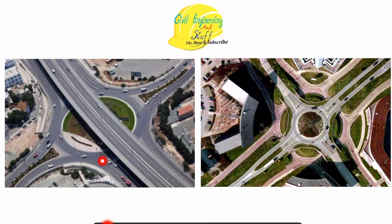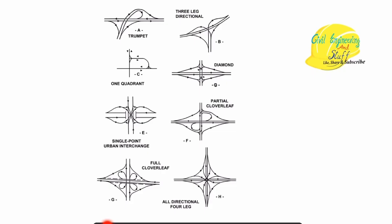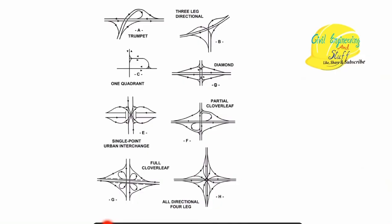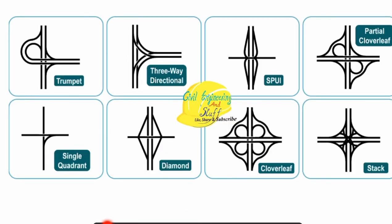When two different elevated roads are present along a rotary intersection, it is called a grade separated rotary. For more detail on rotary at-grade intersections, refer to the earlier video in this series. Along with the types discussed, other varieties of interchanges are also available, including one-quadrant, turbine, stack, and directional types.